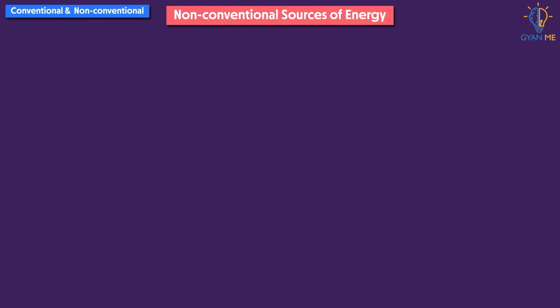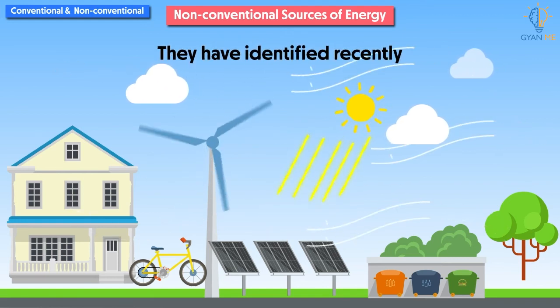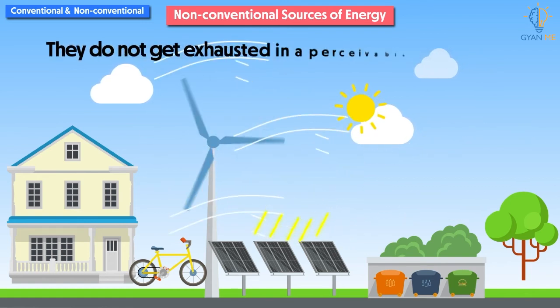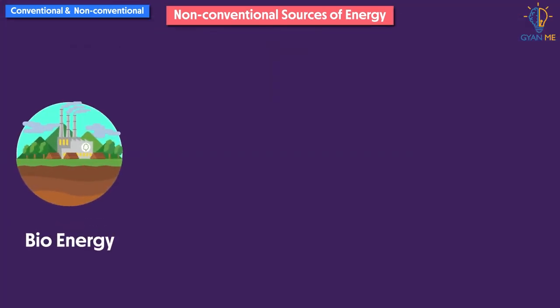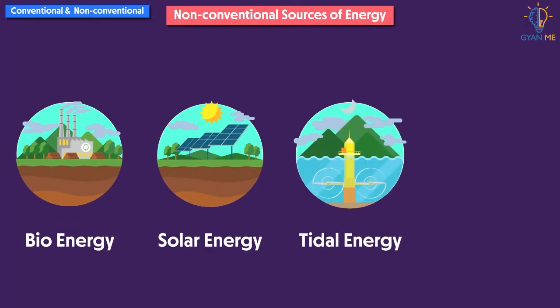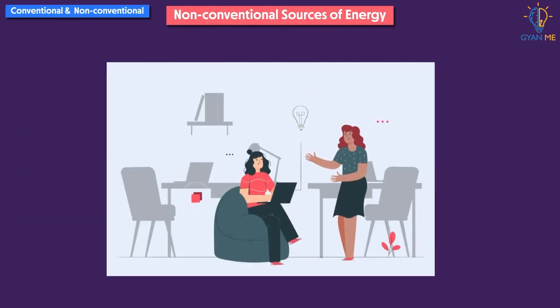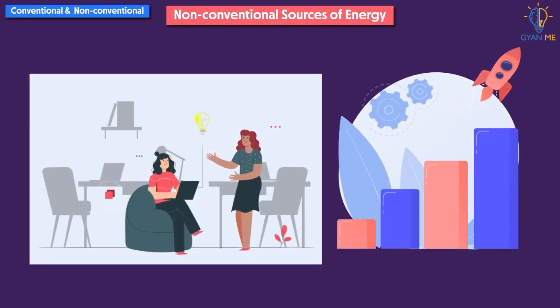On the other hand, non-conventional energy sources refer to sources that have been identified recently. These sources, being recent, will not get exhausted in a perceivable time period. For example, bioenergy, solar energy, tidal energy, wind energy, etc. Since they are recently being put to use, we still have to develop many techniques to use them efficiently for the generation of energy.